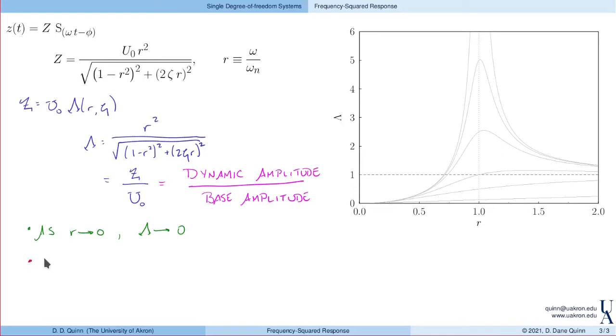Also, for an undamped system, if zeta is equal to zero, then this function, lambda with r and zeta equals zero, reduces to r squared divided by one minus r squared, the absolute value of that. Looking at this plot, you can kind of see what this is going to look like, but let's go and highlight a couple of these. In red, we'll plot lambda for an undamped system. This is zeta equals zero.